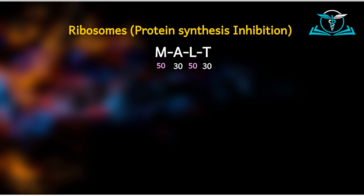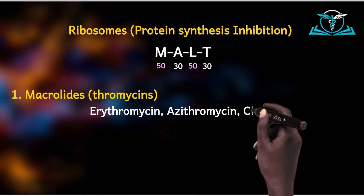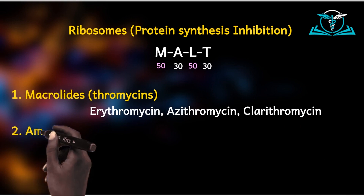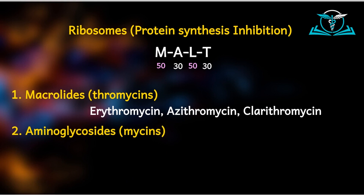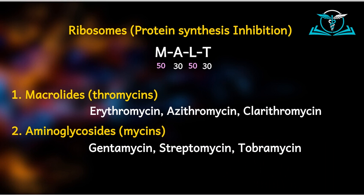Now, how do we identify members of each class? Macrolides usually end with the suffix '-thromycin'. So examples would be erythromycin, azithromycin, clarithromycin — macrolides are the '-thromycins'. Aminoglycosides are the '-mycins' or '-arcins', except for two common antibiotics: vancomycin and clindamycin. Although they end with '-mycin', please remember they are not aminoglycosides. So with those two aside, the aminoglycosides include gentamycin, streptomycin, tobramycin, kanamycin, and amikacin.